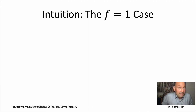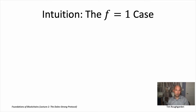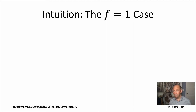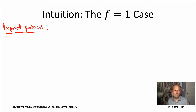Byzantine broadcast is easy if f equals zero. If you're sure that everybody's honest, the sender can just send whatever they have to say to everybody and everybody can just believe them. But even when f equals one, that trivial protocol is not good enough, because if f equals one, for all we know the sender is Byzantine and sends different information to different nodes. So intuitively, to handle the f equals one case — the possibility of a dishonest sender — honest nodes are going to have to do some additional cross-checking, comparing notes and sharing what they heard from the sender.